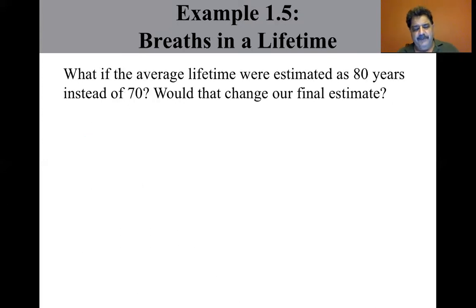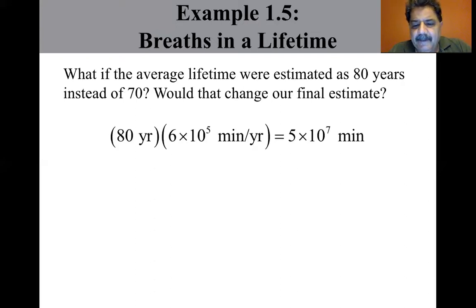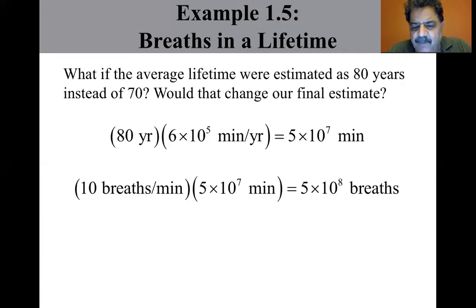Now, what if the average lifetime were estimated as 80 instead of 70? Would that change our final estimate? We could claim that 80 years times six times 10 to the fifth minutes per year is equal to five times 10 to the seven minutes. So our final estimate should be five times 10 to the eighth breaths. This answer is still on the order of 10 to the nine breaths. So an order of magnitude estimate would be unchanged. Since five is greater than 3.162, we bump it up and it still says 10 to the ninth breaths.